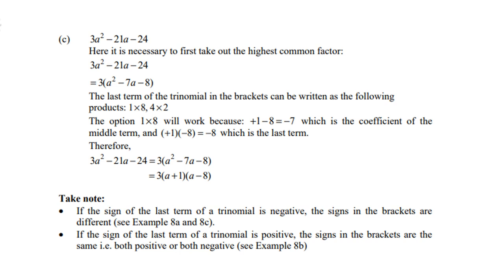So therefore, the factors are then 3 into (a + 1)(a - 8). Take note, if the sign of the last term of the trinomial is negative, the signs in the brackets are different. If the sign of the last term of the trinomial is positive, the signs in the brackets are the same. That is, both positive or both negative.